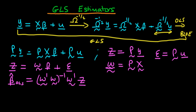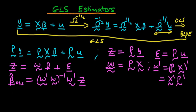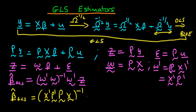We can substitute in the explicit forms for Ω̃ and z to get the GLS estimator. Note that Ω̃′ = (PX)′ = X′P′. Substituting in, we get β̂_GLS = (X′P′PX)^(-1) X′P′z, and since z = Py, this becomes (X′P′PX)^(-1) X′P′Py.